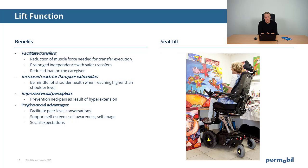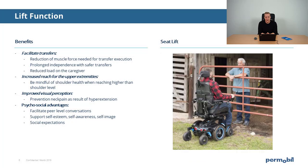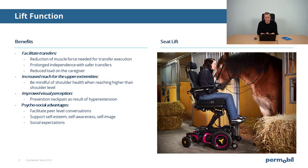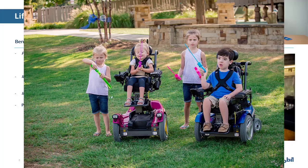Using the lift function facilitates visual perception. Users without the lift function need to hyperextend their neck for visual contact with their speech partner. The lift function enables conversation at peer level. There are also psychosocial advantages — research has shown that the lift function supports the self-esteem, self-awareness, and self-confidence of power wheelchair users.